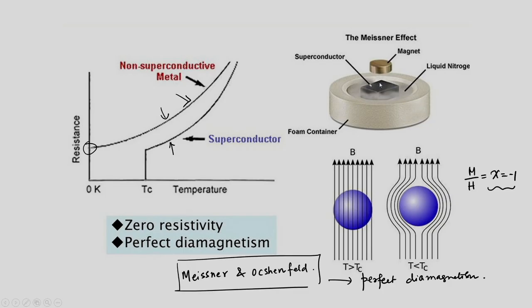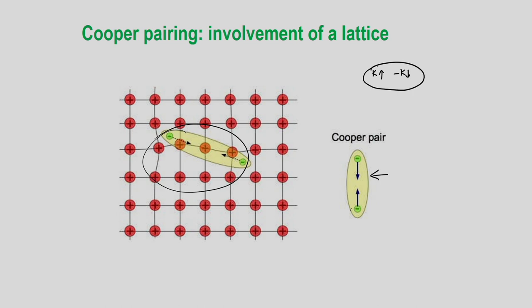There is various support for this pairing scenario, and the BCS transition temperature Tc has been calculated. For the Kitaev model, rather than k-up and minus-k-down pairing (s-wave), we write the Hamiltonian in real space and consider pairing between up-up or down-down electrons, which is called p-wave pairing. The Kitaev chain consists of a p-wave superconductor.